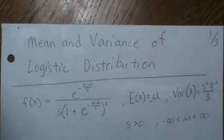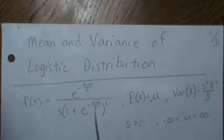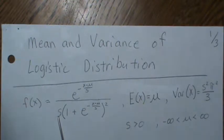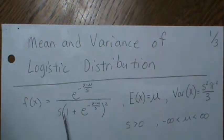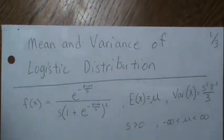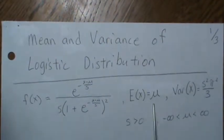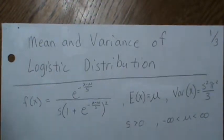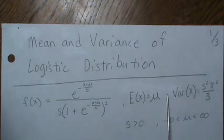In this video, we're going to look at the mean and the variance of the logistic distribution. Here's the general form of it, where s is a positive parameter for the shape and μ is a real number for location. The expected value is μ and the variance is s²π²/3, so we want to derive those.